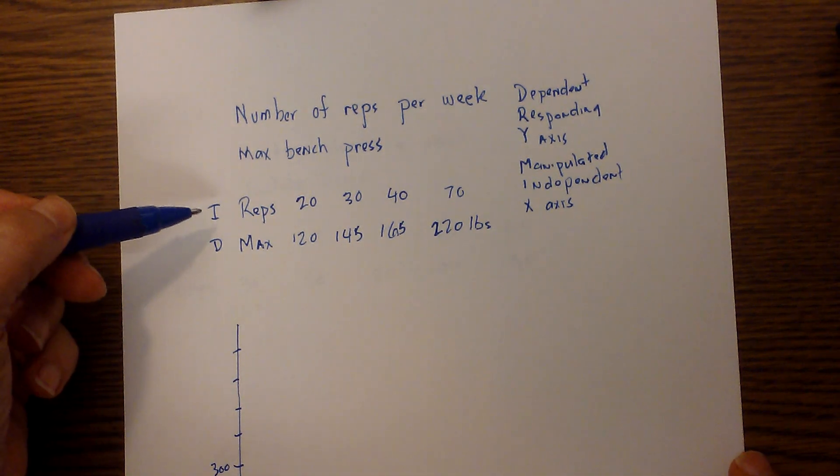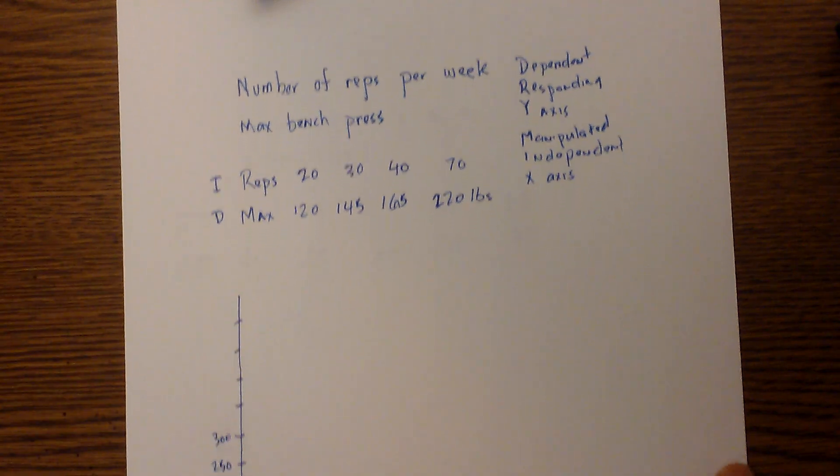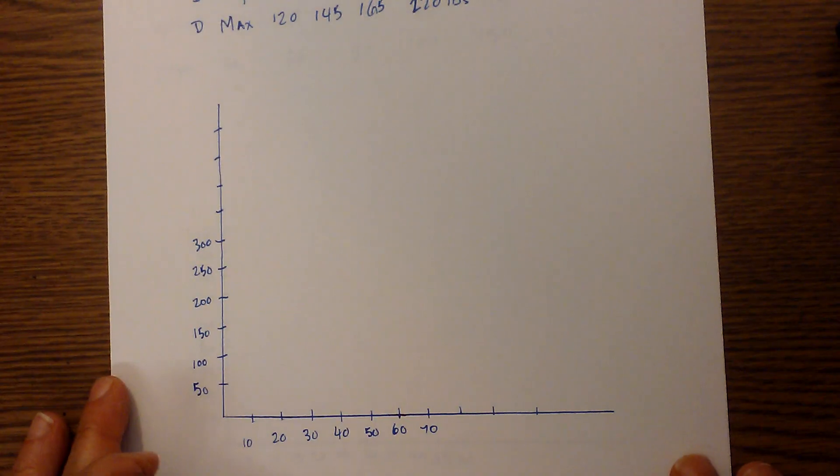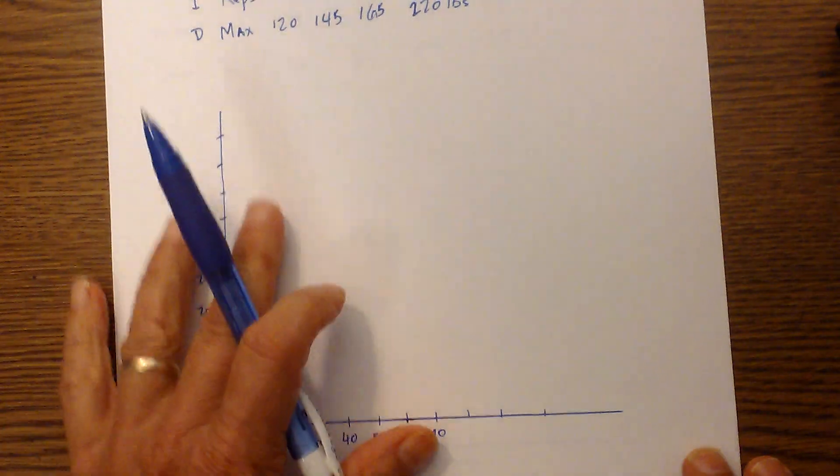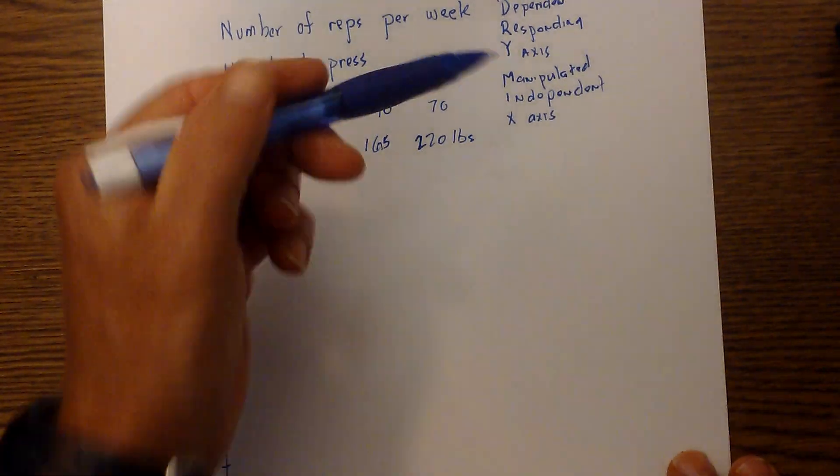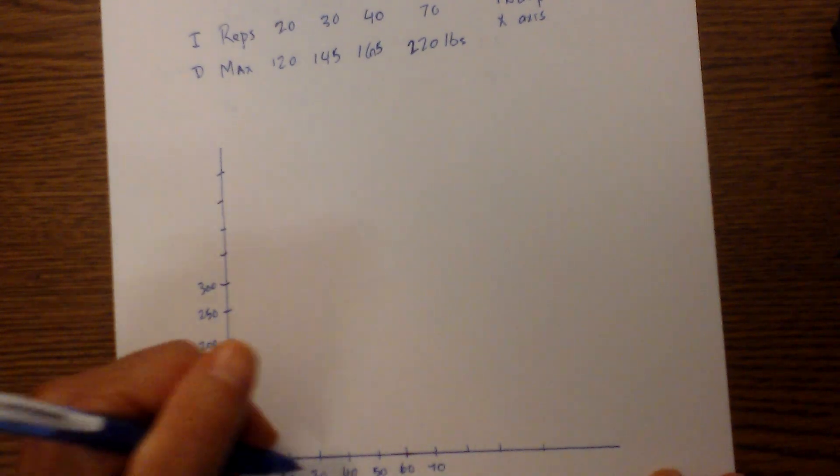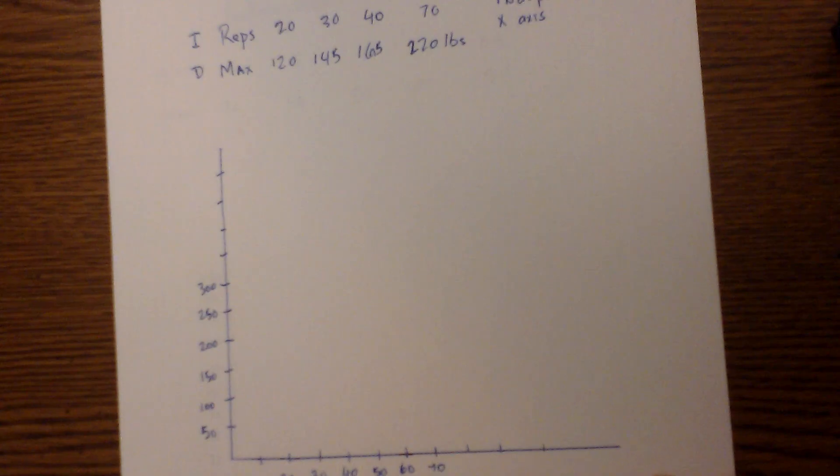Now that I have the variables identified as independent and dependent, I then just set up my graph. The independent goes to the MIX - independent is the X-axis - so this will be the number of reps per week.